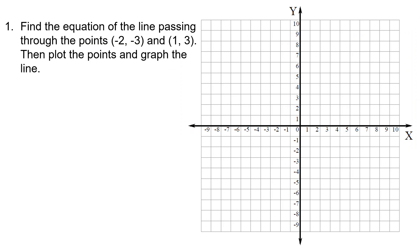Now that we know the slope formula, the point-slope form, and the slope-intercept form, we can start doing some questions. The first question says: find the equation of the line passing through the points negative two comma negative three and one comma three, then plot the points and graph the line. We have a coordinate plane here but we don't need it yet — we're supposed to find the equation of the line first, and plotting the points will be the very last thing we do.